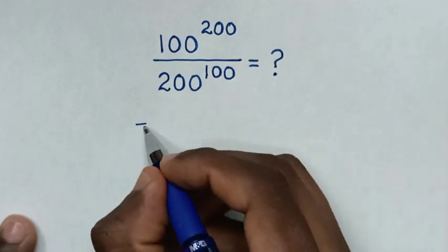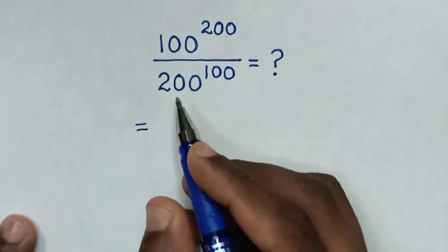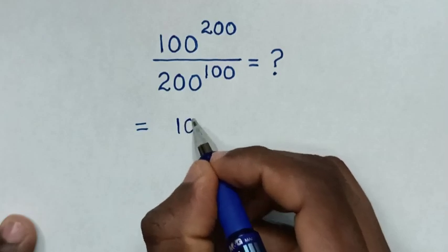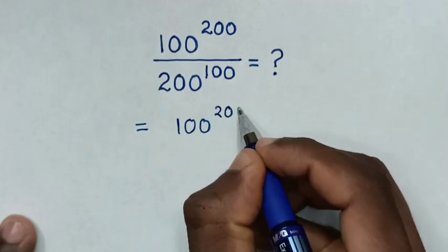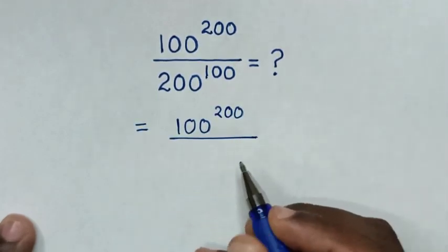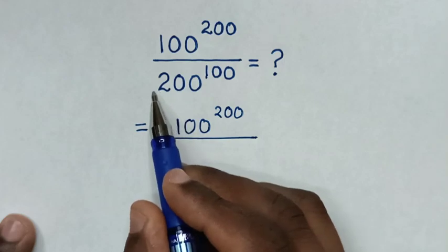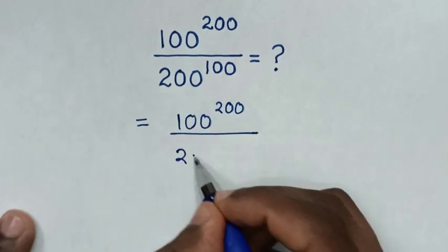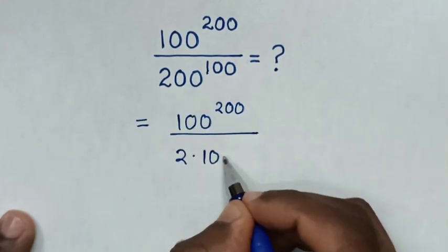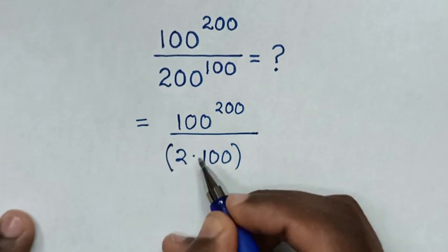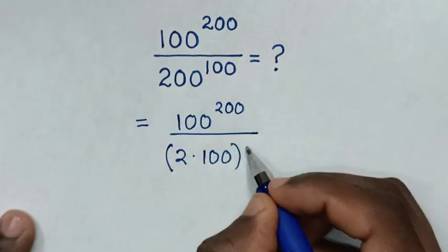So, it will be equal to: from here in the numerator, it is 100 power of 200, then over 200 — which is the same as 2 times 100 — bracket power of 100.